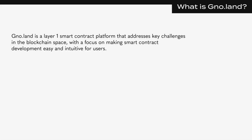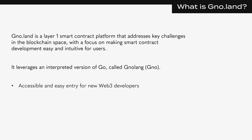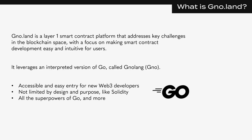So what is Gnoland? Gnoland is a layer one smart contract platform that aims to address key issues in the blockchain space, but mainly focuses on smart contract development and making it as easy as possible for new Web3 developers to contribute with their own experience and ideas. It does this using an interpretive version of Go called Gnoland, or GNO for short. If you're familiar with Go, you can get started right away with GNO — there is no learning curve to overcome.